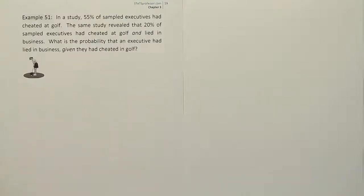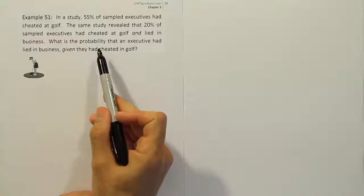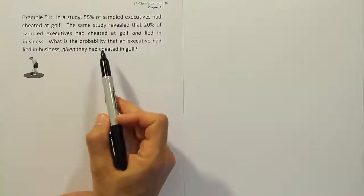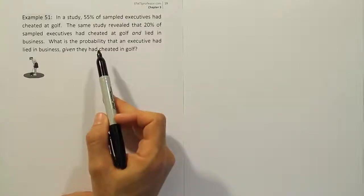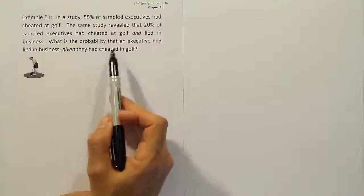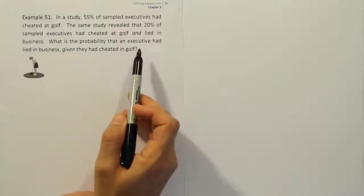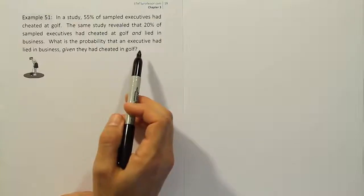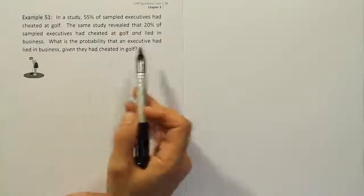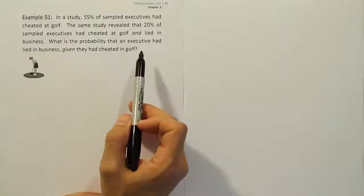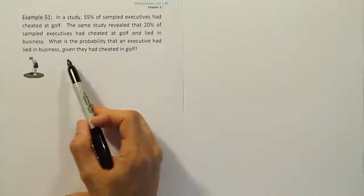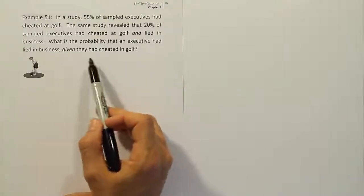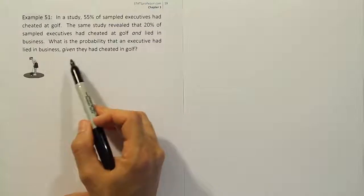Okay, so this problem has some key phrases that indicate this is conditional probability. What's the probability that an executive - that's just one executive. Remembering conditional rule of probability, we should be selecting only one thing. That's why we use one fraction to solve the problem. It says what is the probability that an executive had lied in business given that they had cheated in golf. So that given phrase tells us it's conditional probability.